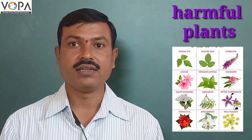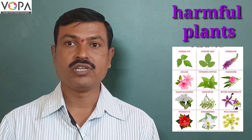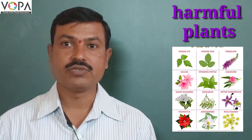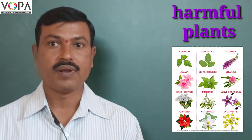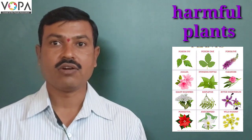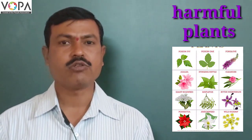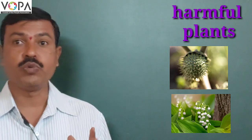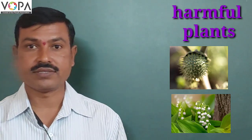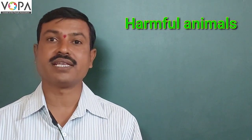Plants like nettle and colocasia leaves cause itching. Plants like oleander and lantana have a strong odor. The datura plant is very poisonous.